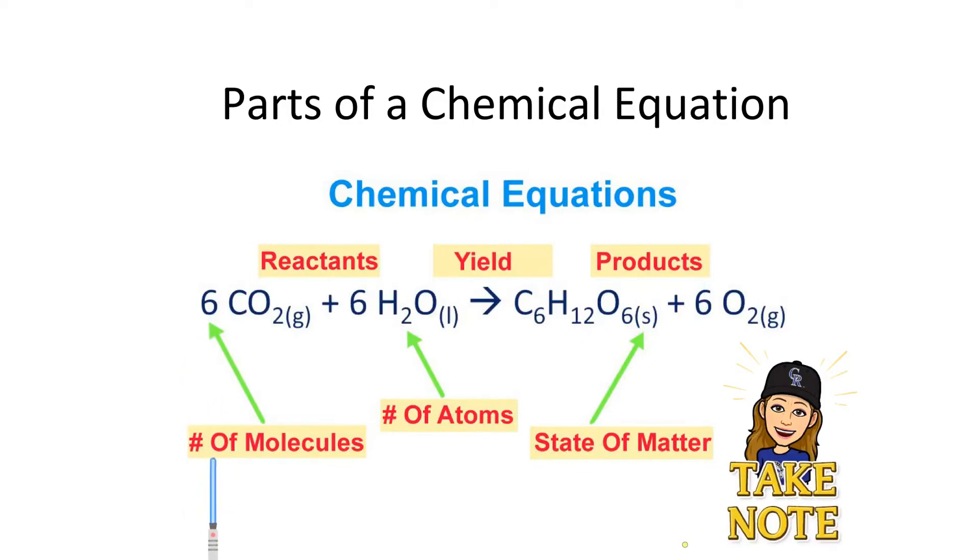In front of them are coefficients, which represent the number of molecules. The subscripts in a chemical formula are the number of atoms.